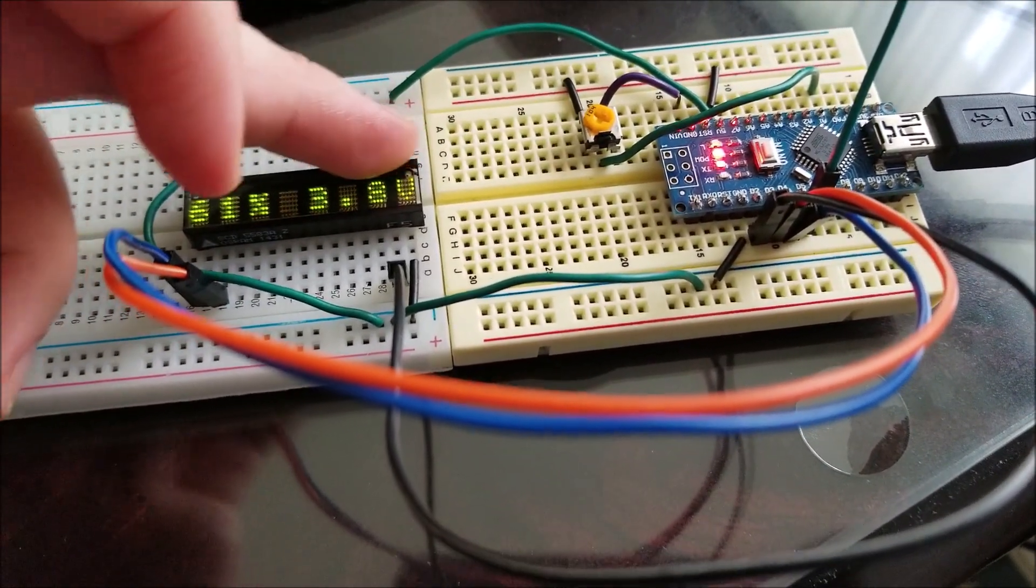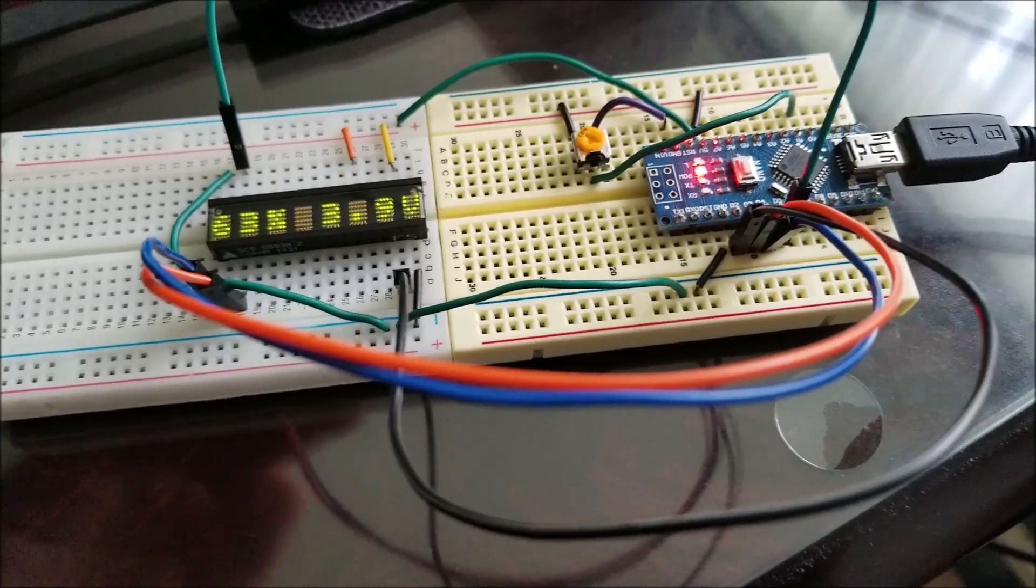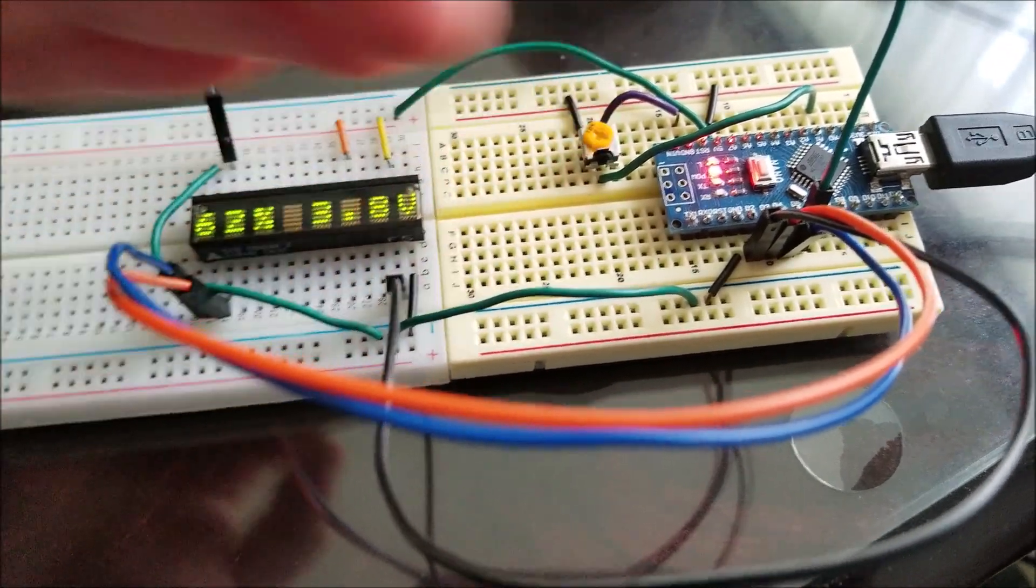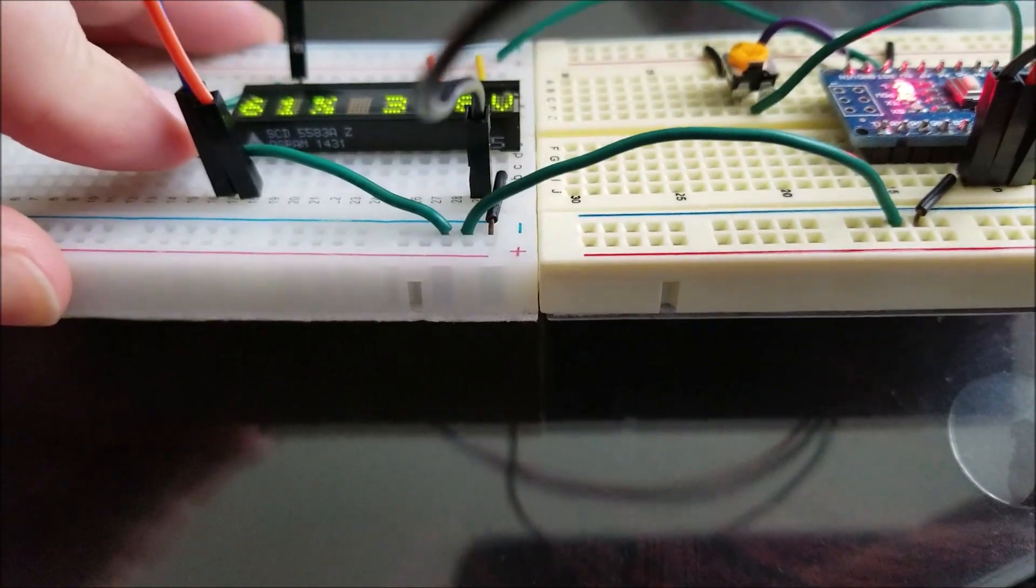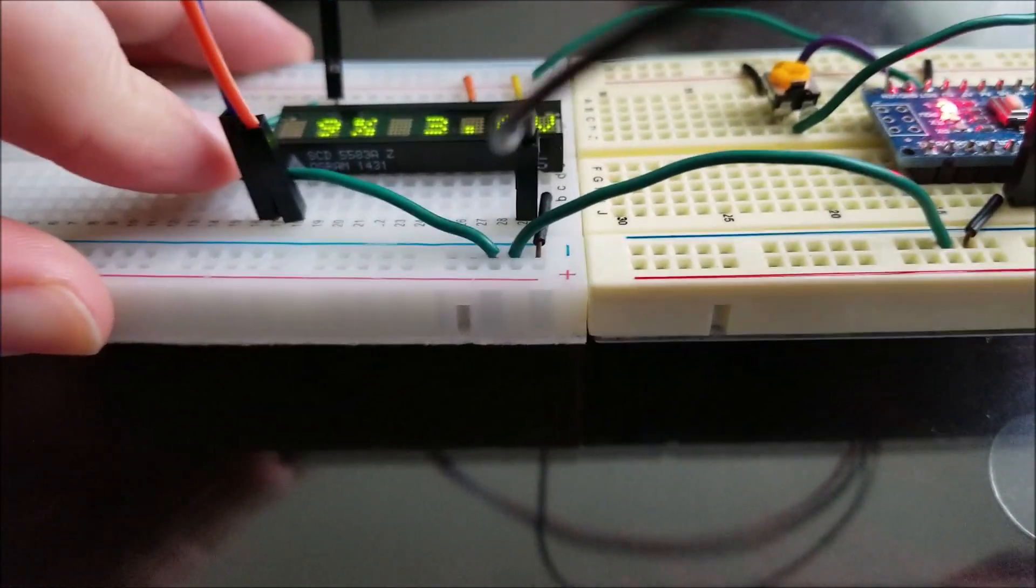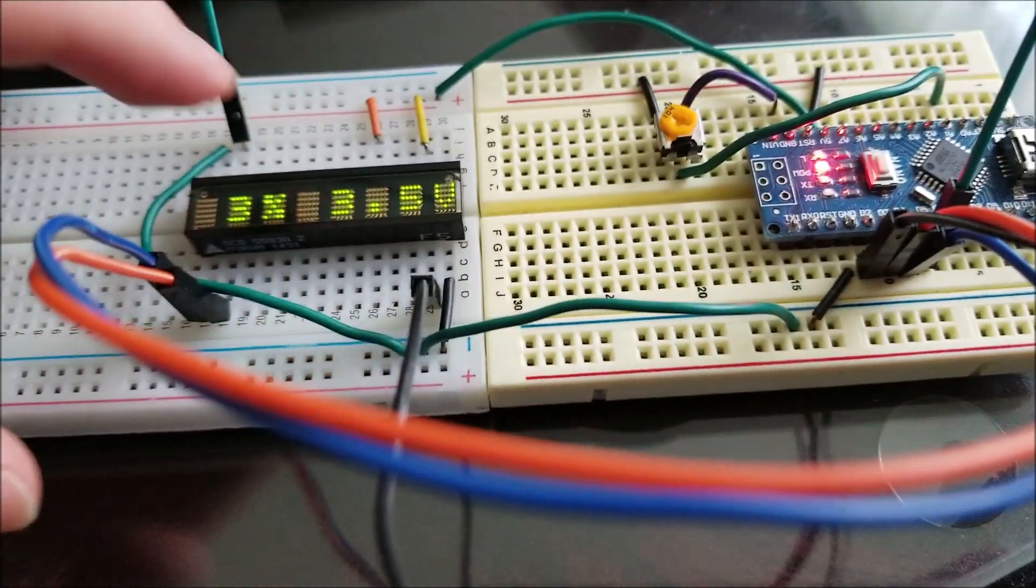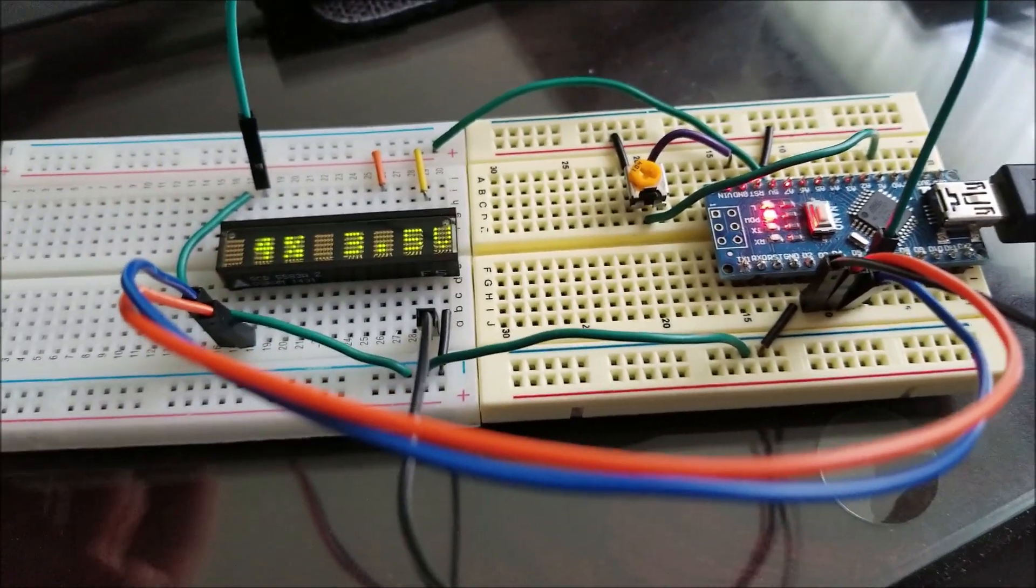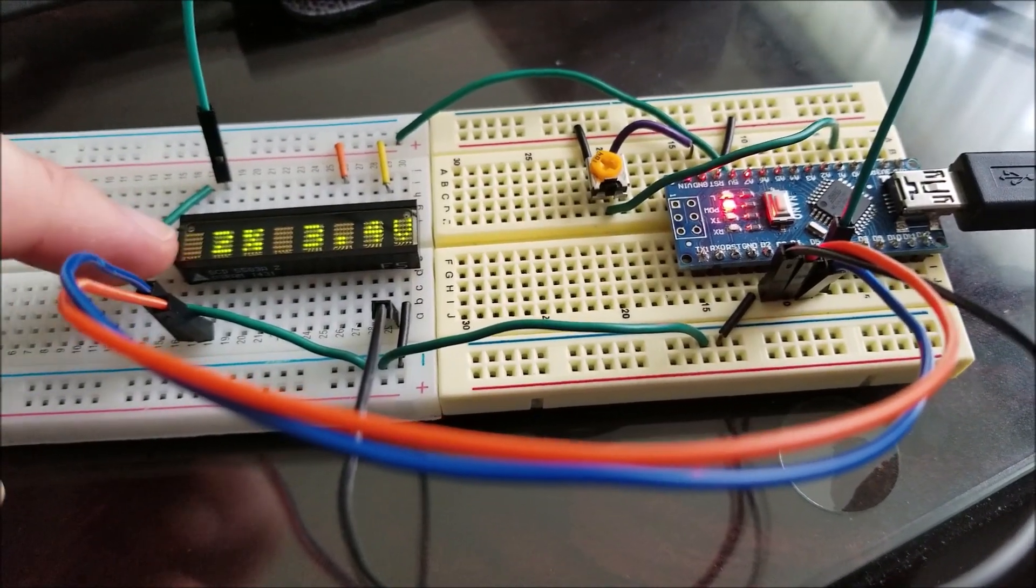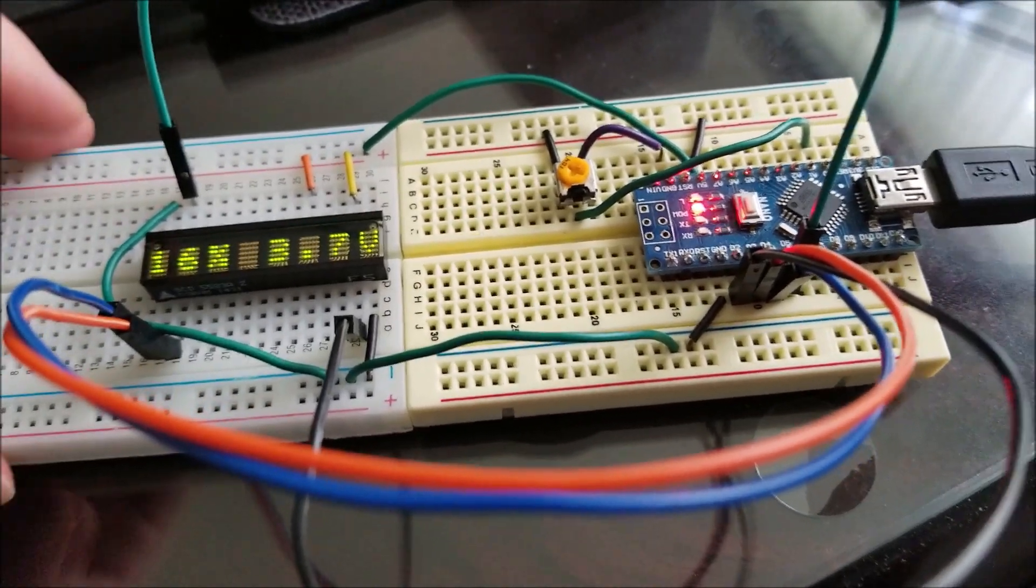I can have this really nice alphanumeric LED display that you can see here. And this guy is an SCD5583A, which is the green model. This display also comes in red, high efficiency red, orange, green, which this is a green one, and the high efficiency green.